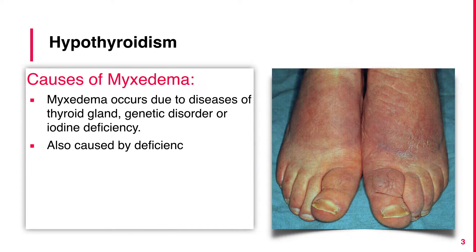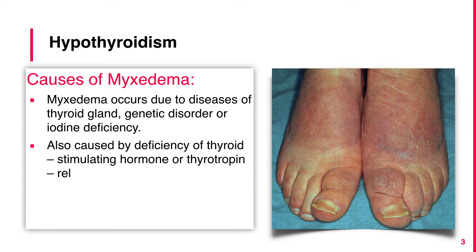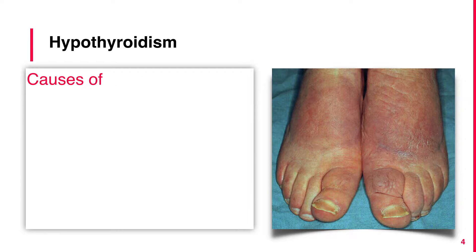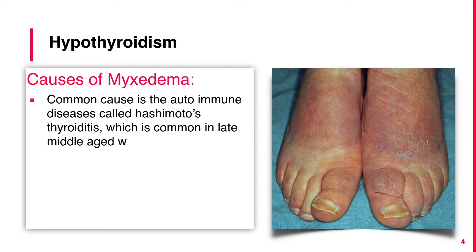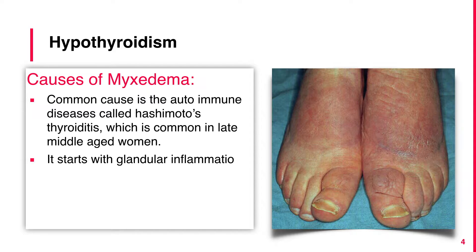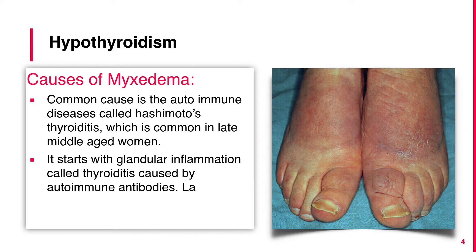It is also caused by deficiency of thyroid stimulating hormone or thyrotropin releasing hormone. A common cause is the autoimmune disease called Hashimoto's thyroiditis, which is common in late middle-aged women. It starts with glandular inflammation called thyroiditis caused by autoimmune antibodies, which later leads to destruction of the gland.